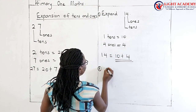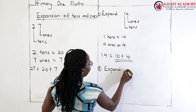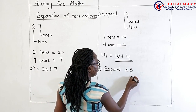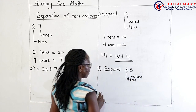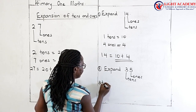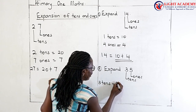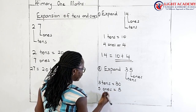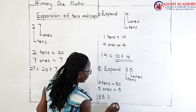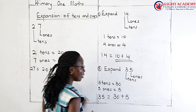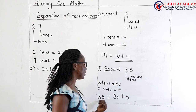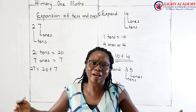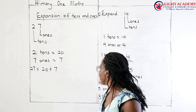Are we together? So I want us to do two more examples and then I will give you a small activity. Let us look at example number 2: expand 35. We know 5 is in the place value of ones and 3 is in the place value of tens. So 3 tens is equal to 30, and then 5 ones is 5. So 35 is expanded as 30 plus 5. Because if you add 30 plus 5, automatically it gives you 35.